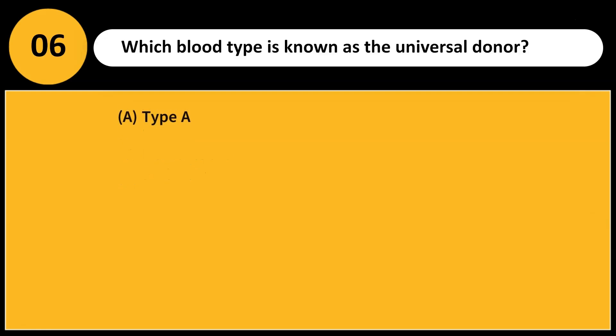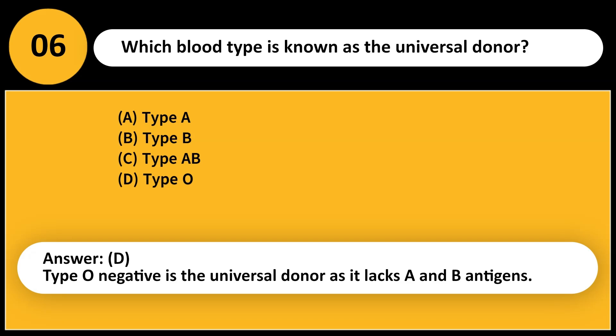Which blood type is known as the universal donor? A. Type A. B. Type B. C. Type AB. D. Type O. Answer: D. Type O negative is the universal donor as it lacks A and B antigens.